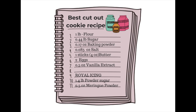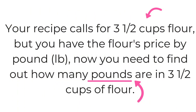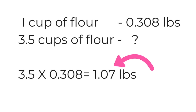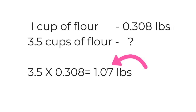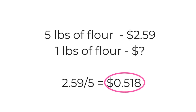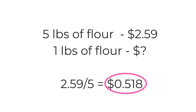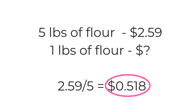Aquí tengo la receta pero ya en libras y en onzas para que sea más fácil calcular el costo. También tengo aquí una tabla de conversiones para que tú puedas hacer tus cálculos. Si tu receta te dice que vas a usar tres y media taza de harina pero tienes el precio de la harina por libras, entonces tienes que saber cuántas libras hay en tres y media taza de harina. Utilizando la tablita de conversión, una taza de harina tiene 0.308 libras, entonces el resultado es 1.07 libras. Si 5 libras de harina te cuestan $2.59, haciendo una regla de tres te da un gran total de 51 centavos por libra.